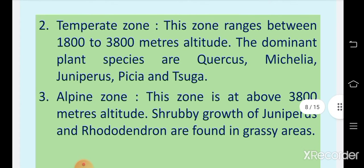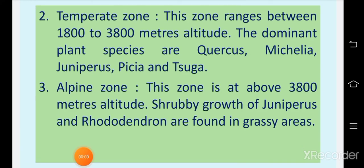The temperate zone of eastern Himalayas ranges between 800 to 3800 meters altitude. The dominant plant species are Quercus, Michelia, Juniperus, Picea, and Tsuga. Important conifers of this region are Picea, Abies, Larix, Juniperus, and Tsuga species.